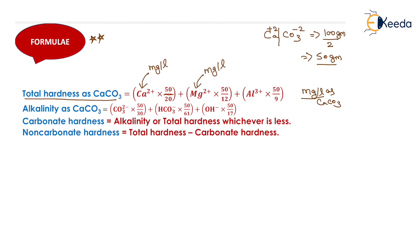Alkalinity is created by carbonate, bicarbonate, and OH⁻. Alkalinity (mg/L as CaCO₃) = [CO₃²⁻ (mg/L) × 50/30] + [HCO₃⁻ (mg/L) × 50/61] + [OH⁻ (mg/L) × 50/17], where 30, 61, and 17 are the ionic weights of CO₃²⁻, HCO₃⁻, and OH⁻ respectively.